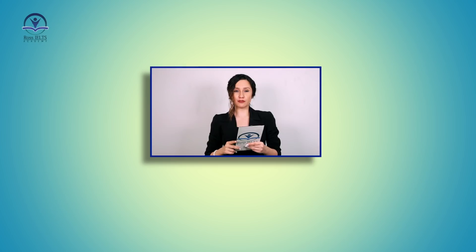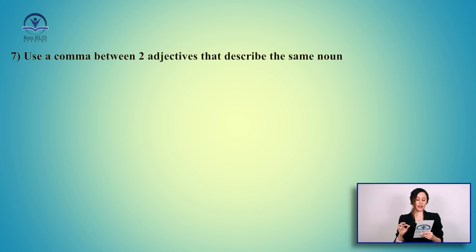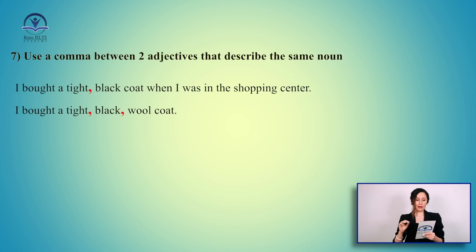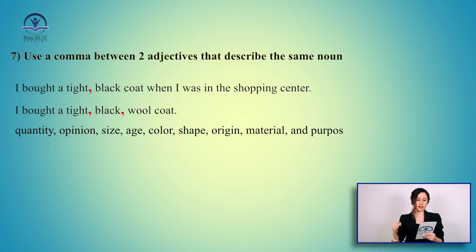Let's talk about another usage of comma. You can use a comma between two or more adjectives that describe one noun. For example: 'I bought a tight, black coat when I was in the shopping center.' Tight and black are two adjectives describing the coat, so you need a comma between them. Or: 'I bought a tight, black, wool coat' — three adjectives, so commas between each. However, when you have many adjectives and don't know which should come first, you can follow this order: quantity, opinion, size, age, color, shape, origin, material, and purpose.